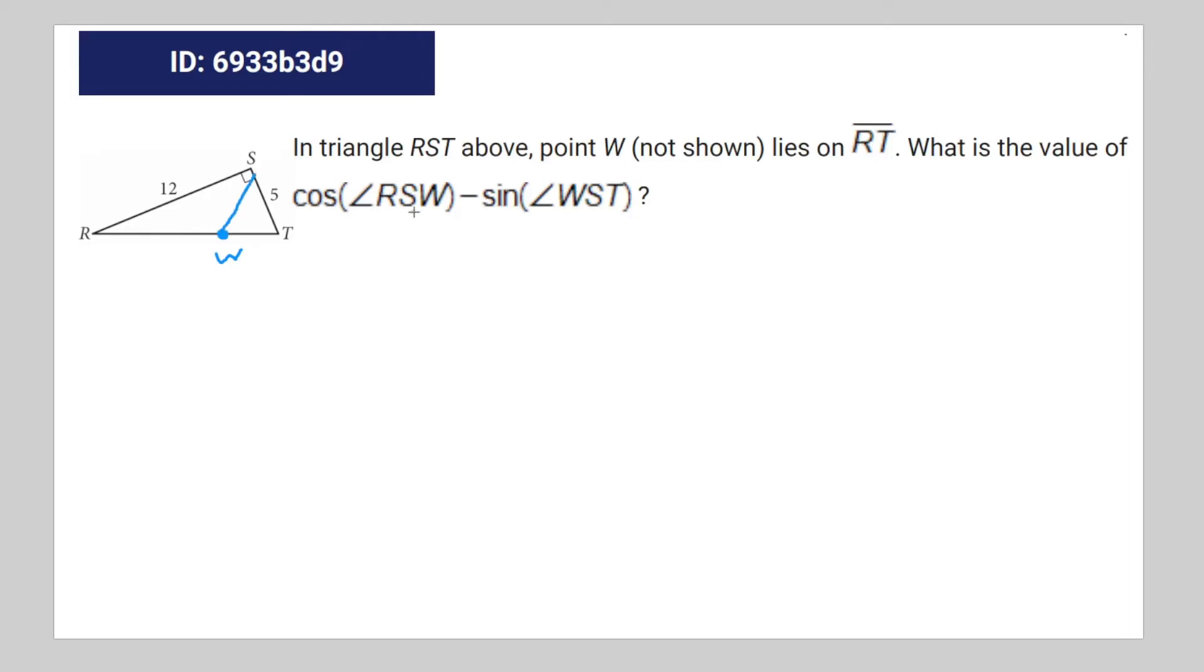Because the angles RSW and WST are going to equal 90 degrees. Therefore, they're complementary angles, and the cosine of one complementary angle is equal to the sine of the other.